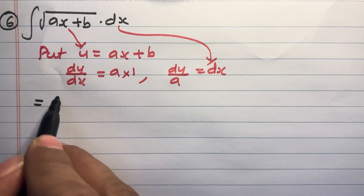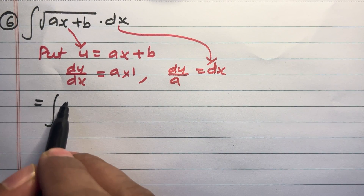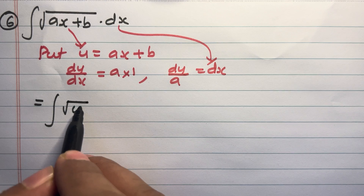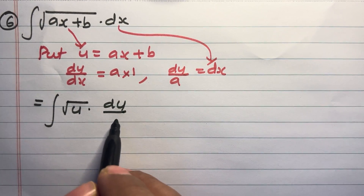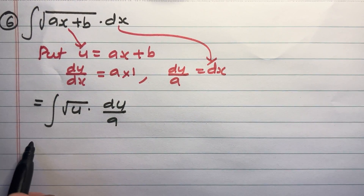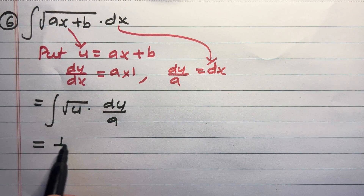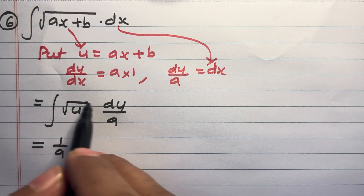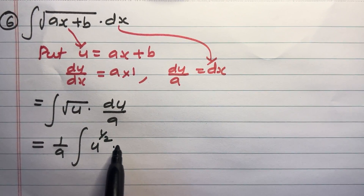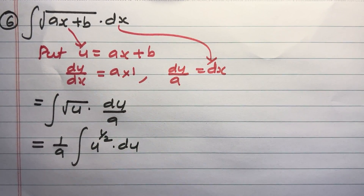The integral becomes the integral of square root of u into du divided by a. Taking 1 by a outside, we get 1 by a times the integral of u raised to 1 by 2, du.